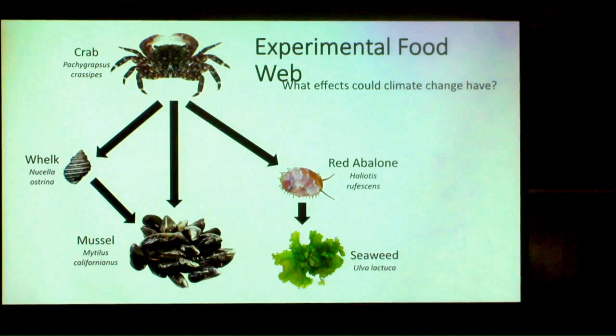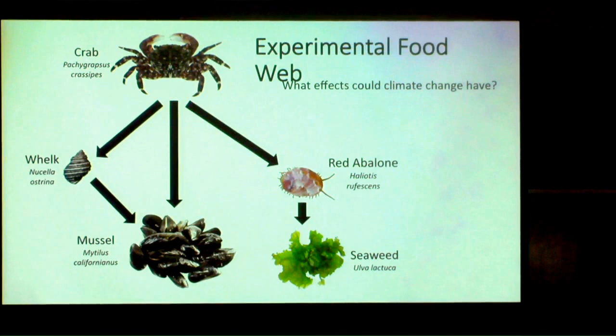We weren't looking at direct mussel responses — just how they're affected by predation. If warmer temperatures increase crab feeding, that would negatively impact mussels. But it could also negatively impact whelks, which would then have an indirect positive effect on mussels, complicating things. For acidification, our prediction was that the most negatively affected species would be the ones with calcareous skeletons — mussels, whelks, and abalone — since they need to get carbonate out of the water, which is harder under acidic conditions. Crabs were expected to be relatively unaffected since they don't primarily have calcareous skeletons.